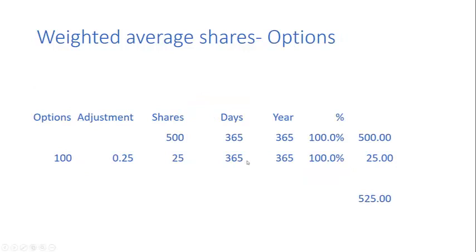To calculate the weighted average number of shares on issue: we have 500 shares normally for 365 days — 500. We have 100 options, and the adjustment factor is 0.25. So the options represent the issue of 25 shares which aren't paid for, giving us 25. That gives us a weighted average number of shares of 525 shares.